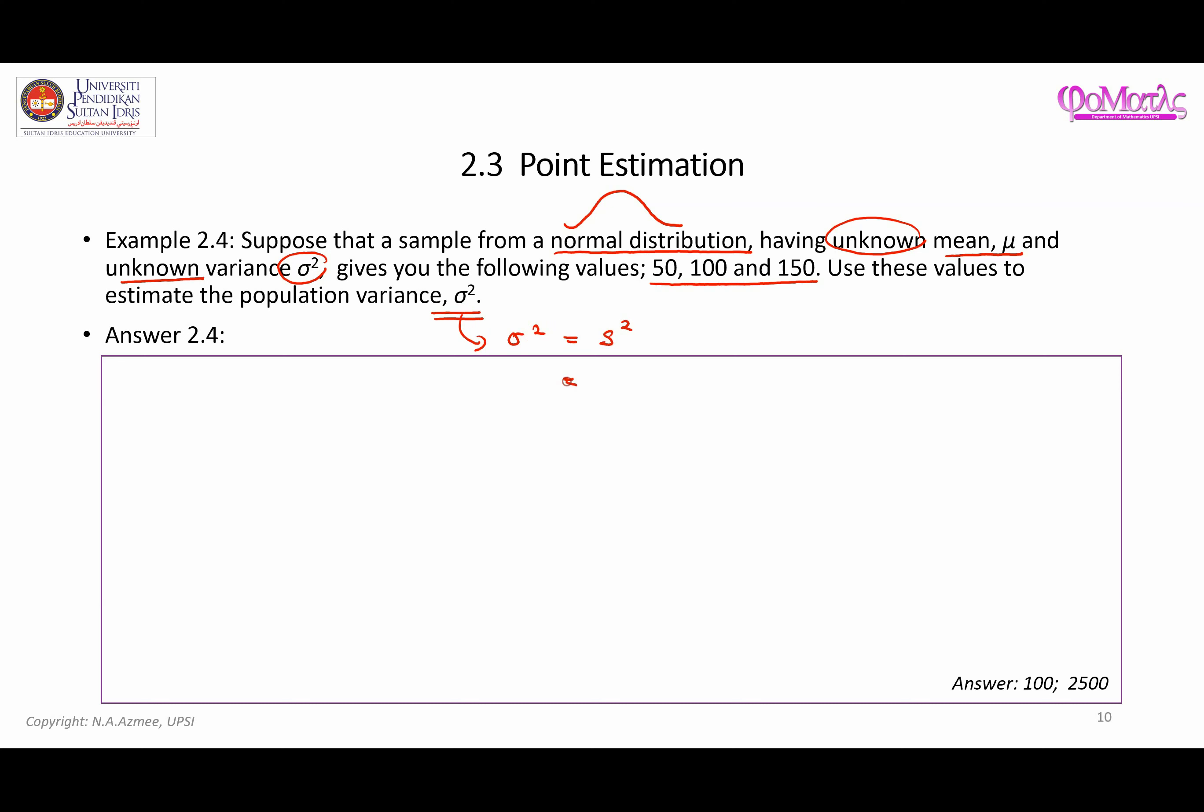And the sample variance is equal to the summation of xi minus x bar squared over n minus 1. This is from i equals 1 until 3, because we only have three data values. You can see that in order to find the sample variance here, you need to first calculate the sample mean.